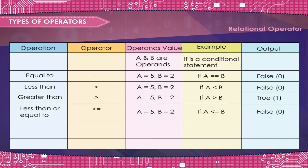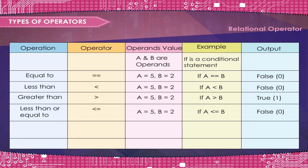Less than or equal to: A is equal to 5, B is equal to 2. If A is less than or equal to B — False, 0.